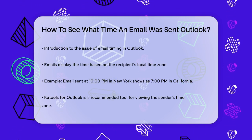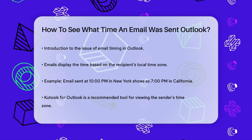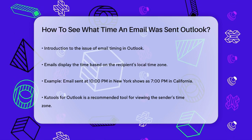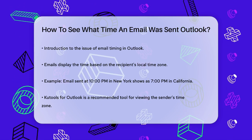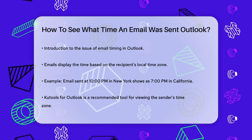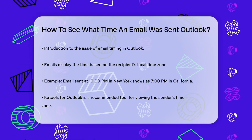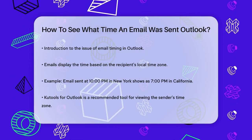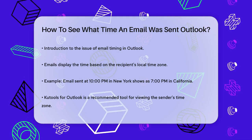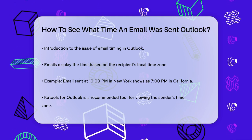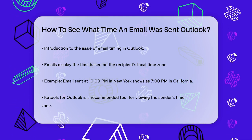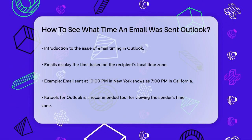When you receive an email in Outlook, the time displayed is usually based on your local time zone, not the sender's. For instance, if someone in New York sent you an email at 10 p.m. and you're in California, the email will show it was received at 7 p.m. your time.